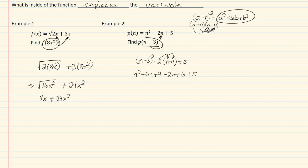Now I need to combine all my like terms. I have two n terms and three constants. So we have n², negative 6n and negative 2n gives me negative 8n. Nine plus six gives me fifteen, plus five gives me twenty, so I'm going to have plus twenty. And I'm done.